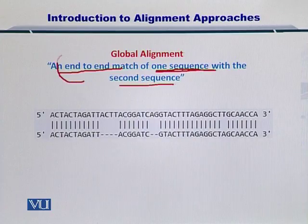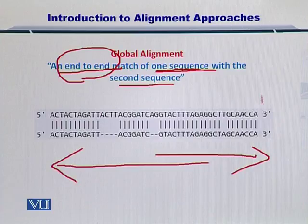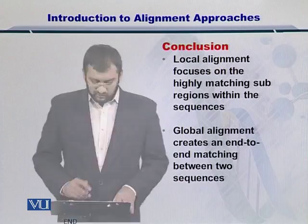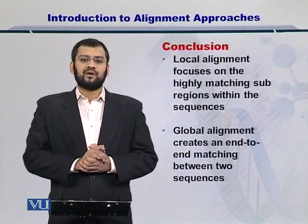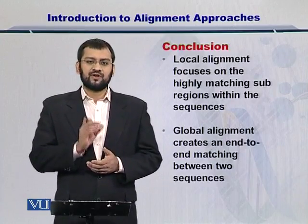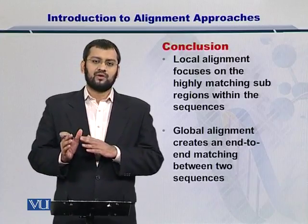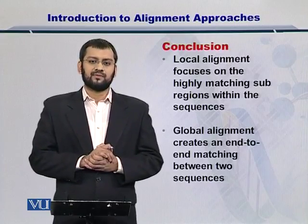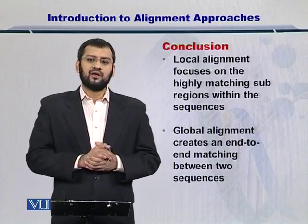I managed to do that by stretching the shorter sequence so that the start and the end of both sequences is the same. In conclusion, local alignment focuses on specific sequences between the longer and the shorter sequence, while global alignment focuses on the overall end-to-end match between the two sequences.